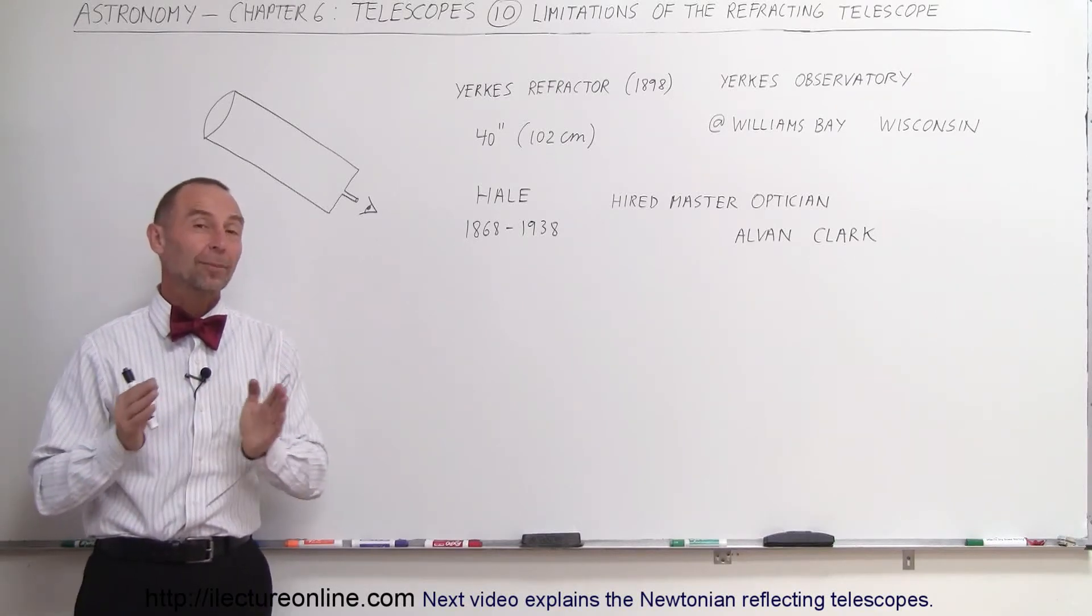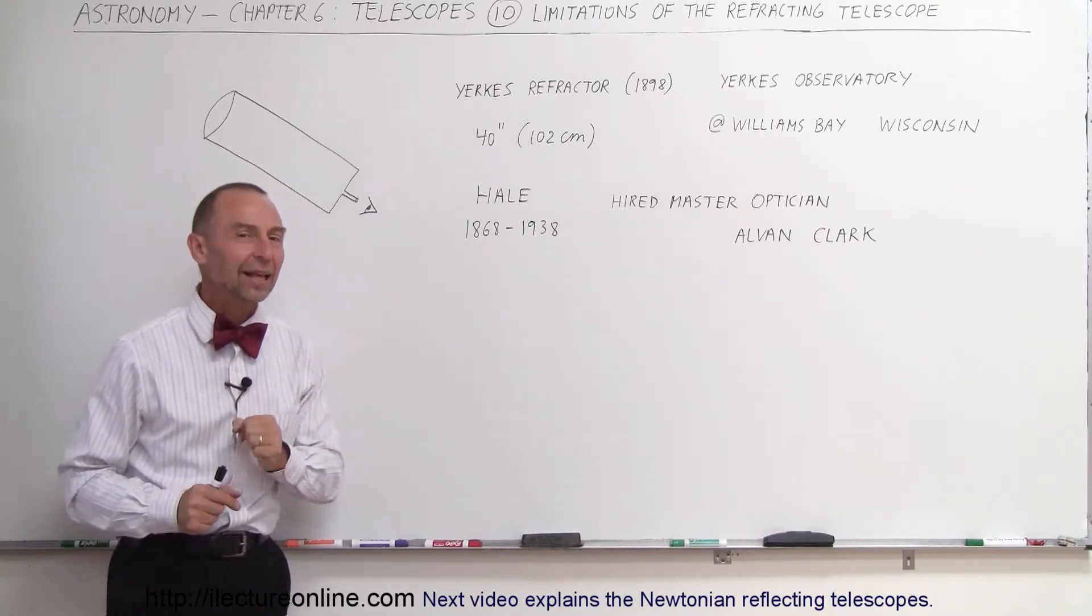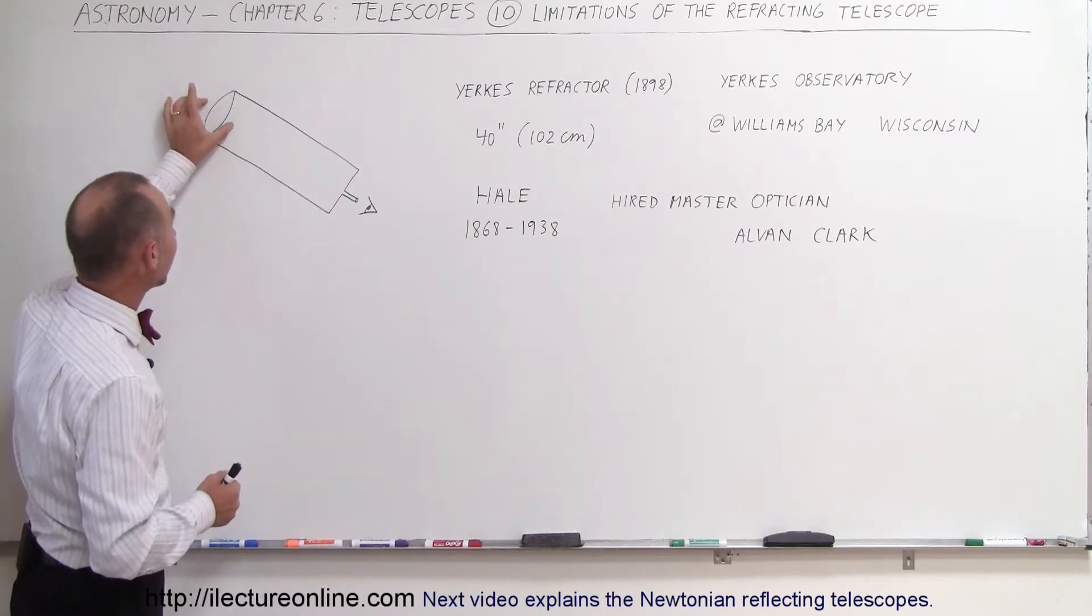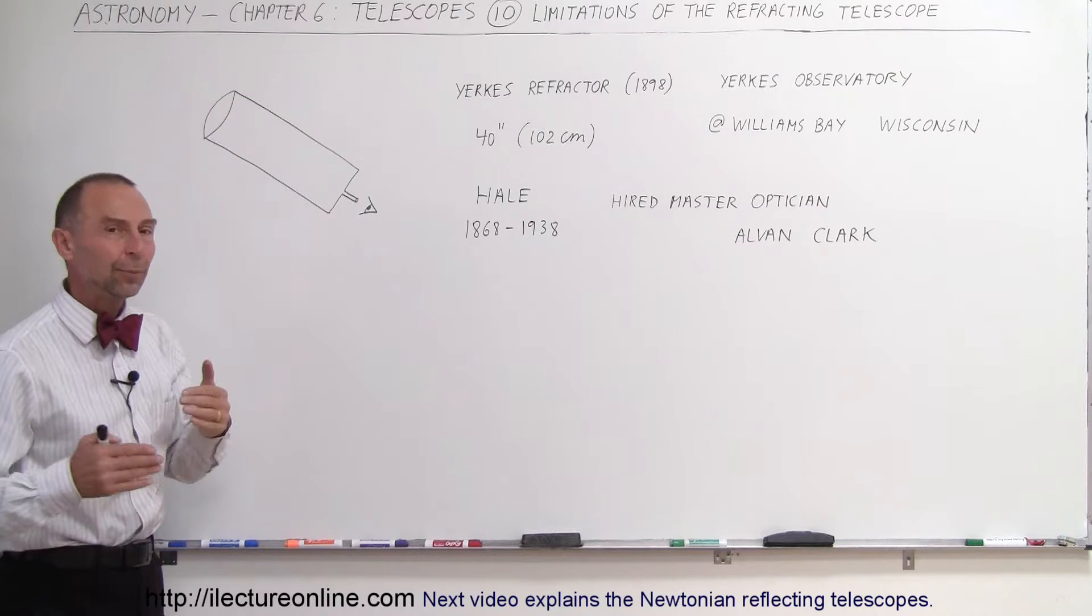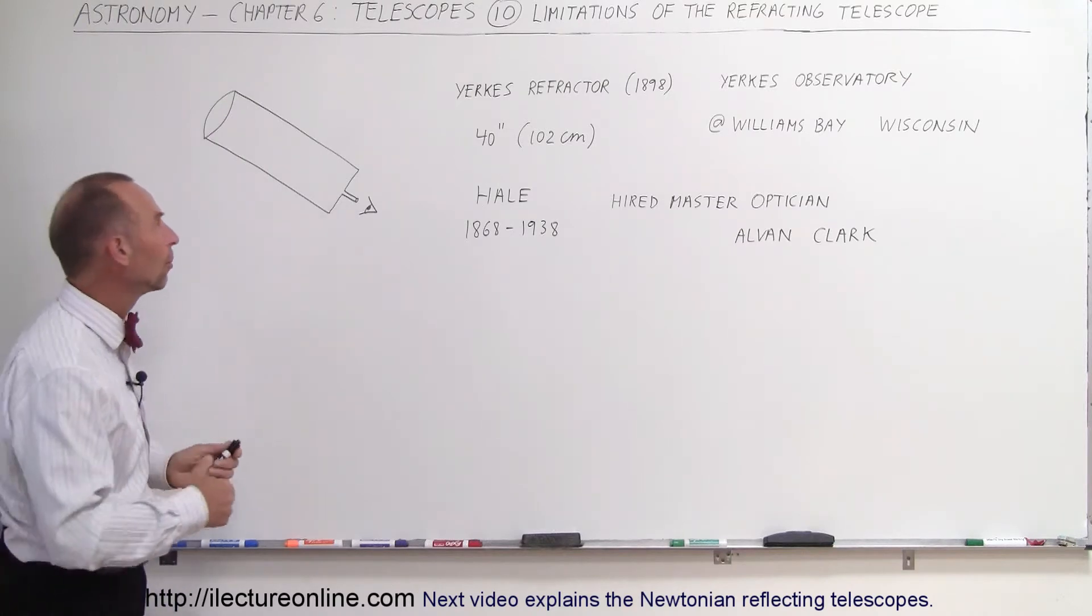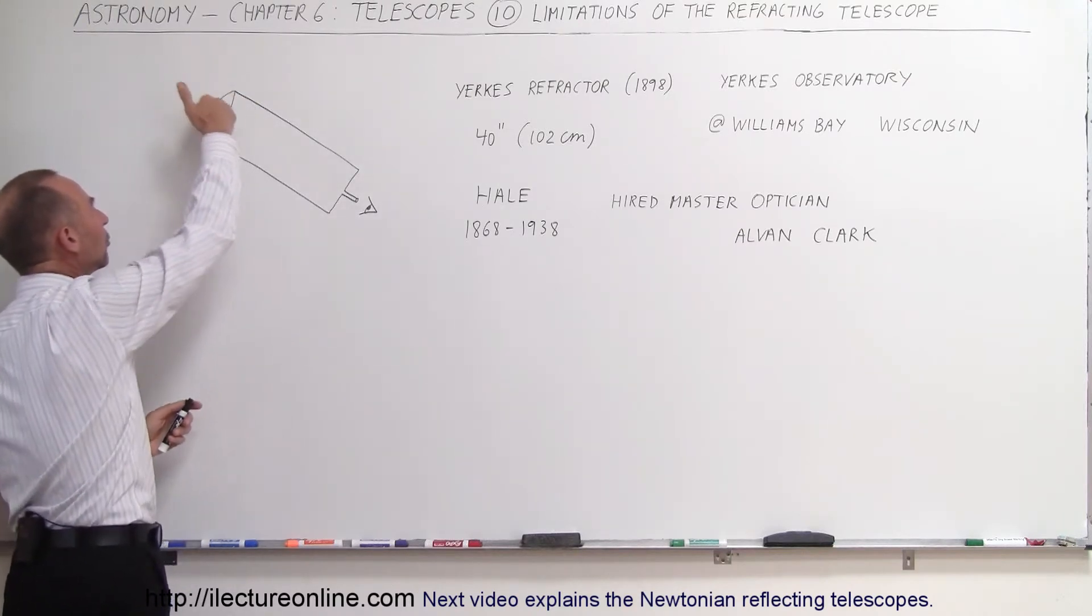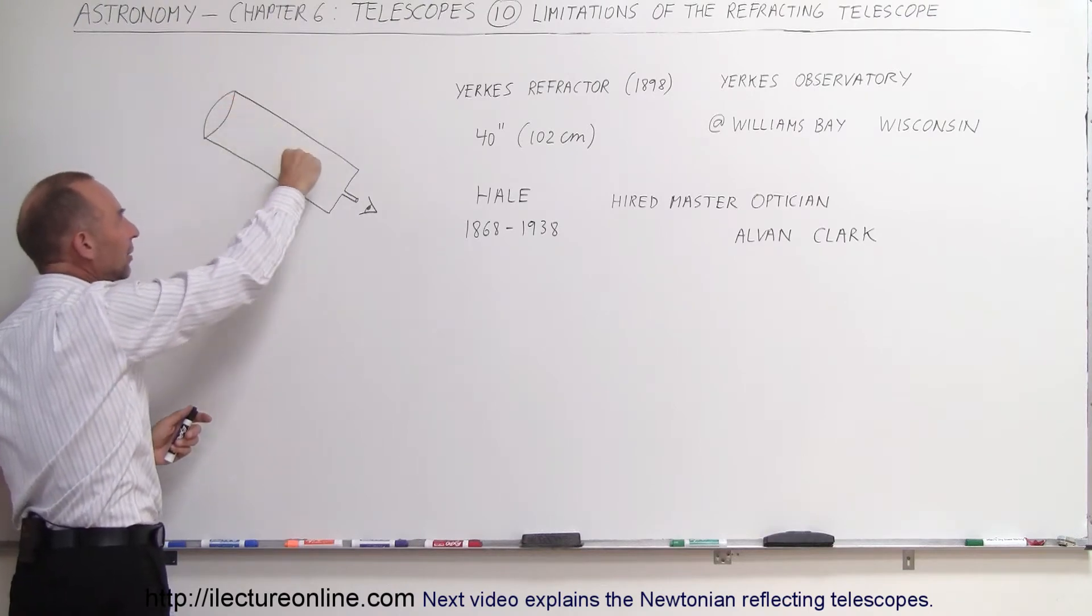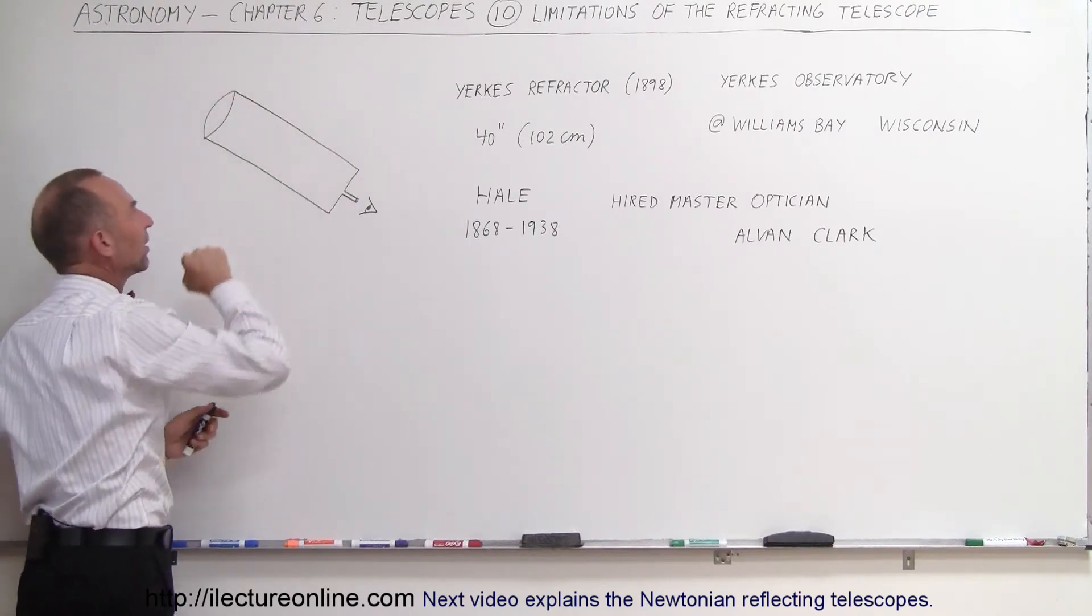Welcome to Electron Align and now let's talk about the limitations of a refracting telescope. Remember, a refracting telescope was a telescope that used the lens for the objective and we call it a refracting telescope because the rays of light coming through the lens would then refract or bend and come together at the focal point towards the end of the telescope.